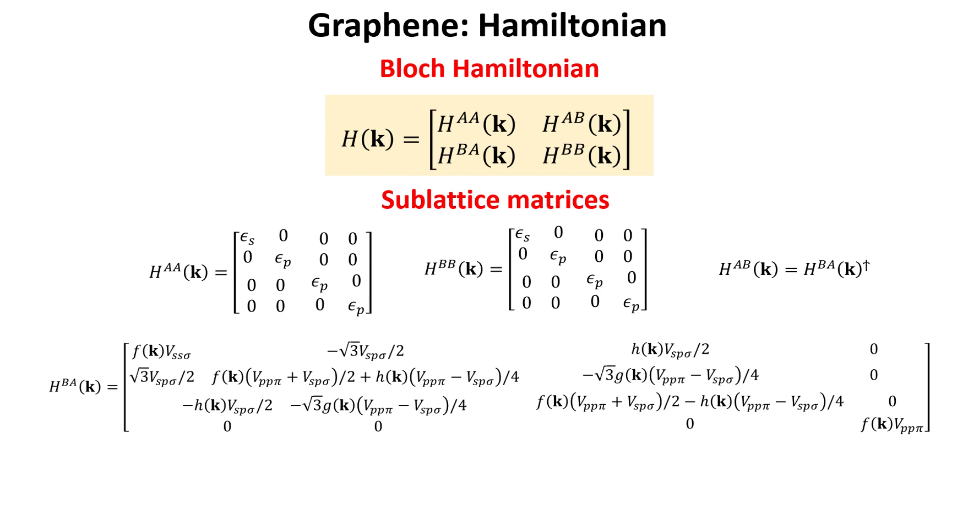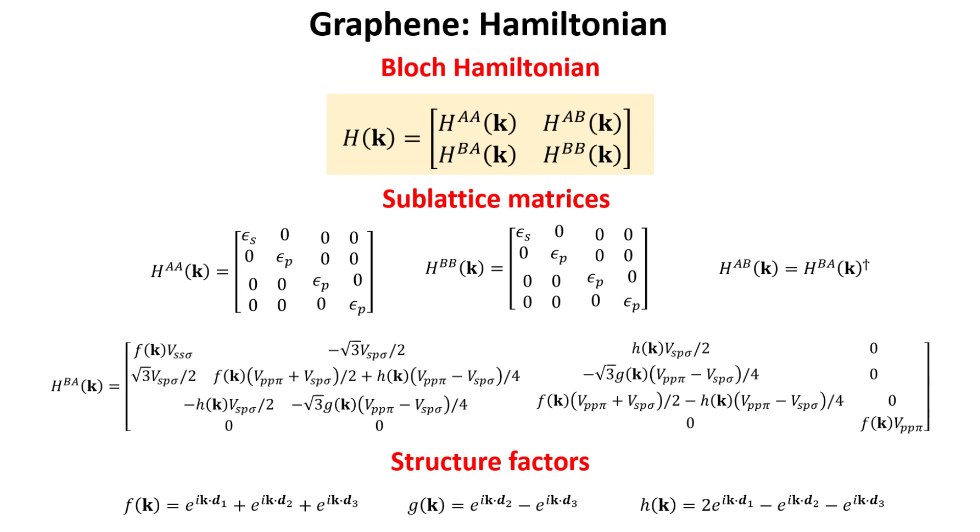All momentum dependence is confined to three functions. These functions depend on the three vectors connecting a carbon atom to its three nearest neighbors. These vectors are d1, d2, and d3. These functions are often referred to as the structure factors. We refer you to our previous video where we have detailed the derivation of this Hamiltonian.